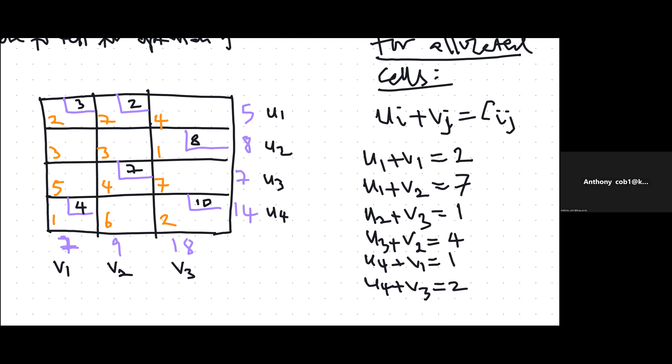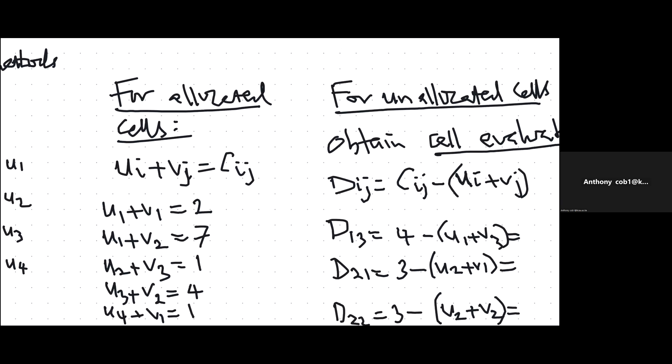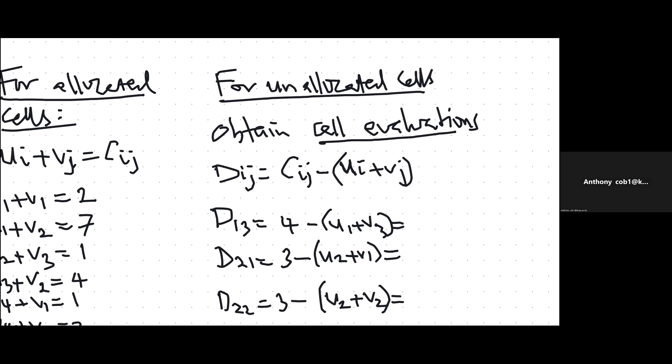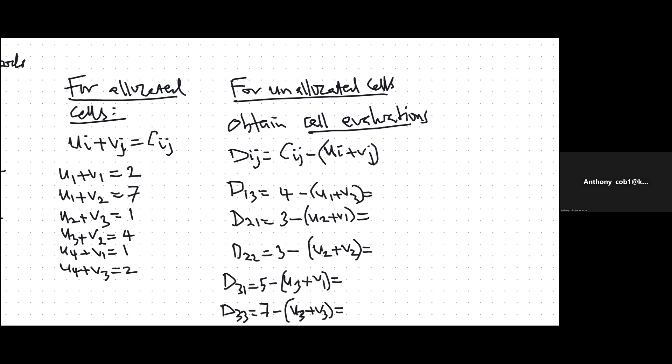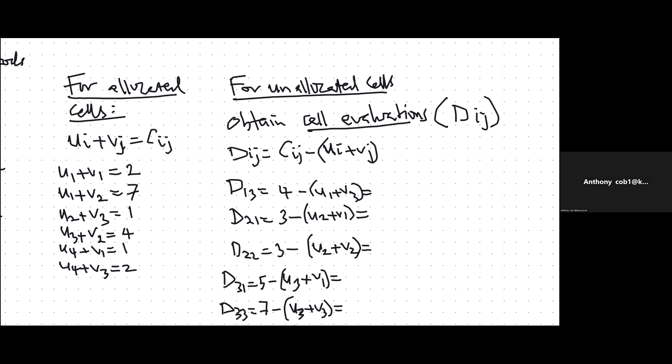For the unallocated cells, we compute what we call cell evaluations, denoted as Dij's, where i is the row number and j is the column number. The Dij's are given by: Dij equals the cost of that cell minus (Ui plus Vj), where Ui and Vj are the values we obtained from the allocated-cell equations.